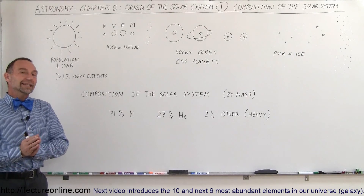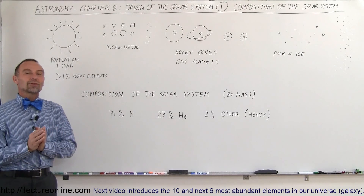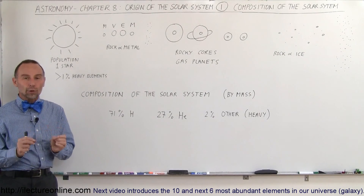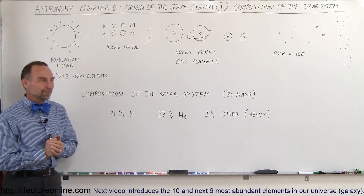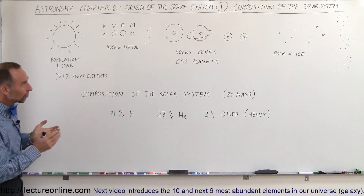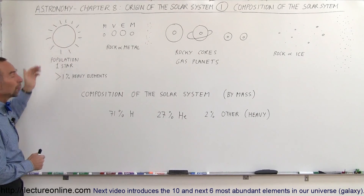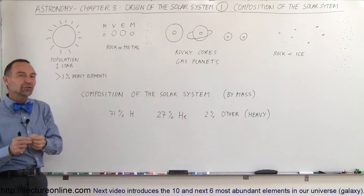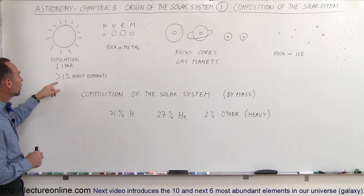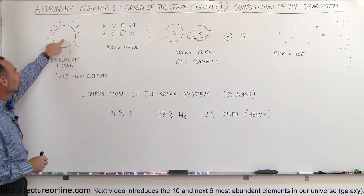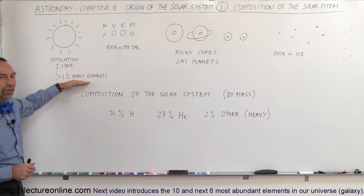Welcome to Electro Online. In this series, we're going to talk about the origin of the solar system. The solar system consists of the Sun, and it turns out the Sun is what we call a population 1 star, which means that more than 1% of the Sun's mass consists of heavy elements.